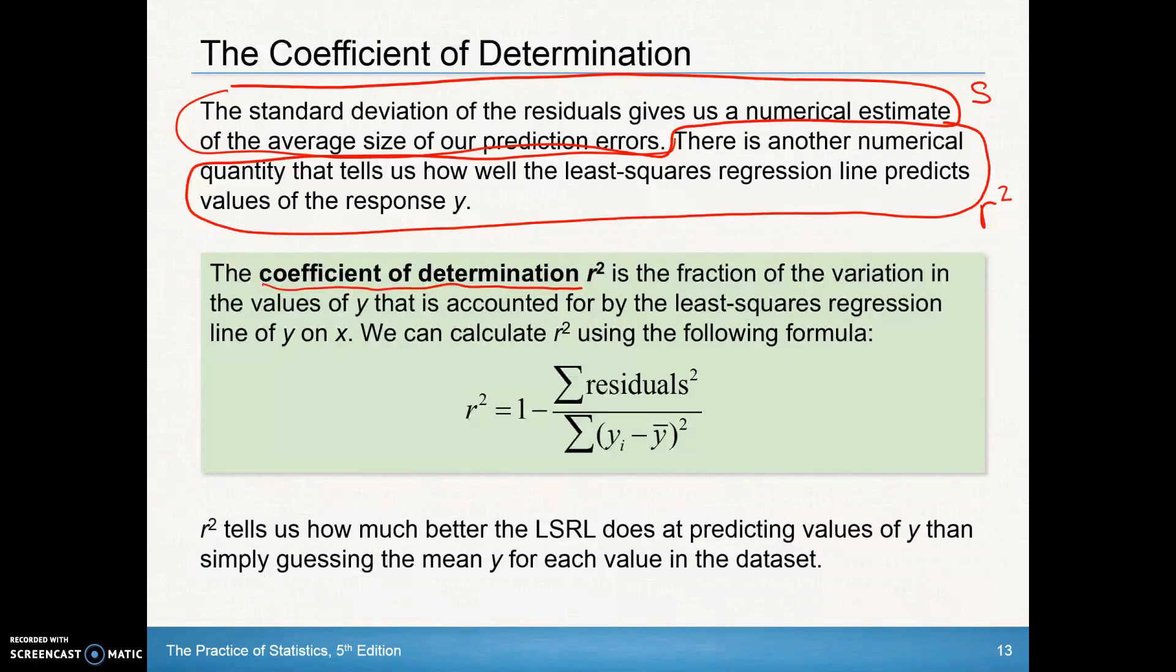Previously, we calculated the correlation coefficient, that r-value. The r-value has to be between negative 1 and 1. The r-squared value is just the square of that.